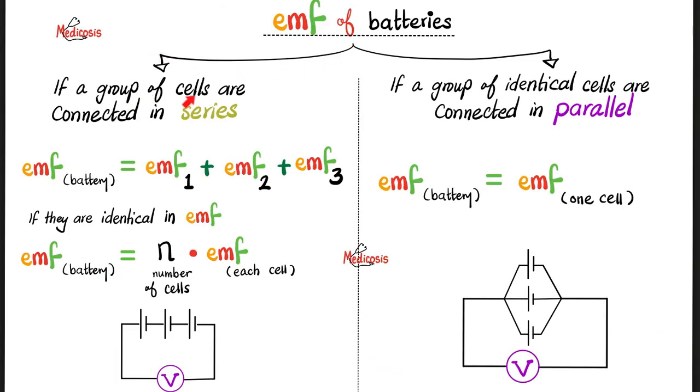We're going to suppose that we have a group of electric cells. Here's the first, the second, and the third, and they are connected in series like this, one after the other after the other. If you want the electromotive force for the entire whole thing, the entire battery, you simply add the electromotive force for this, to this, to this. Add them all together, you get the electromotive force for the entire battery.